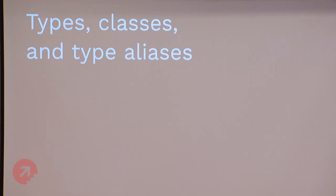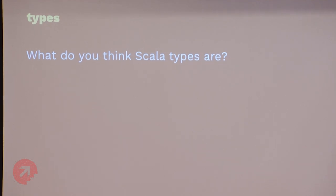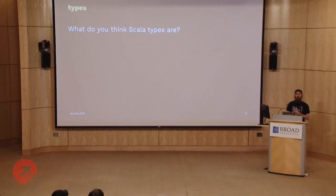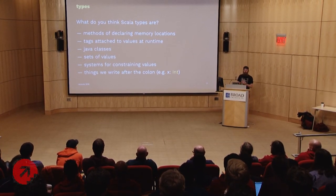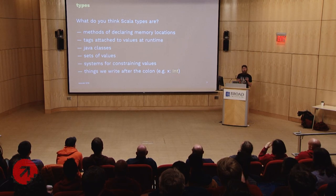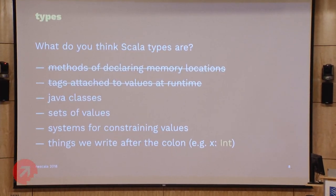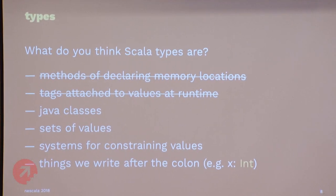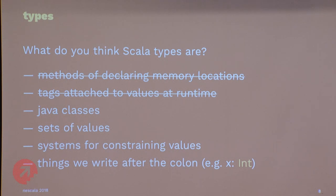So, types, classes, type aliases. Raise your hand if you feel like you have a pretty good idea of what Scala types are. About half to two-thirds of people. Here are six things you might think types are. I'll just rule the first two out — C considers the first one to be what a type is, and a lot of dynamic languages like Python would consider the second, checking runtime information. Those aren't what we're talking about here.